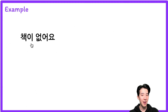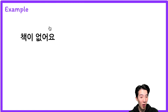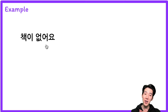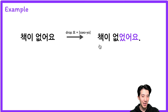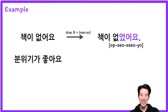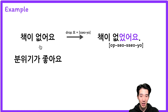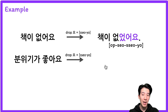So here: 책이 없어요 — what is 없어요? 'Not have.' So 책이 없어요 means 'there is not a book.' In the present tense, if you drop the 요 that is the basic form, so I'm going to add 써요 — 책이 없었어요. Next one: 분위기가 좋아요. 분위기 means 'atmosphere' or 'mood.' The restaurant atmosphere was good — 분위기가 좋았어요.